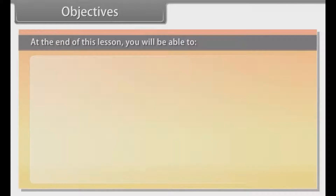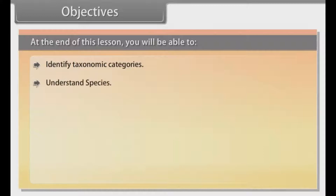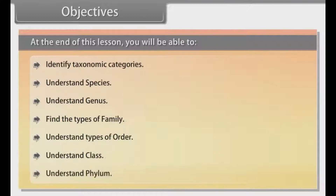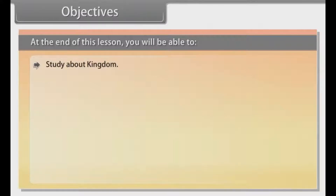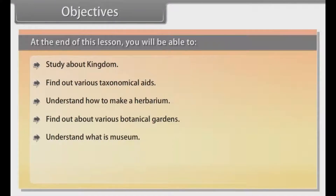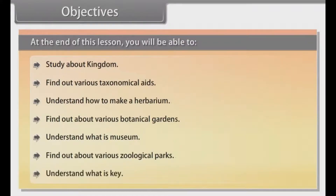At the end of this lesson you will be able to identify taxonomy categories, understand species, understand genus, find the types of family, understand types of order, understand class, understand phylum, study about kingdom, find out various taxonomical aids, understand how to make a herbarium, find out about various botanical gardens, understand what is a museum, find out about various zoological parks, and understand what is a key.